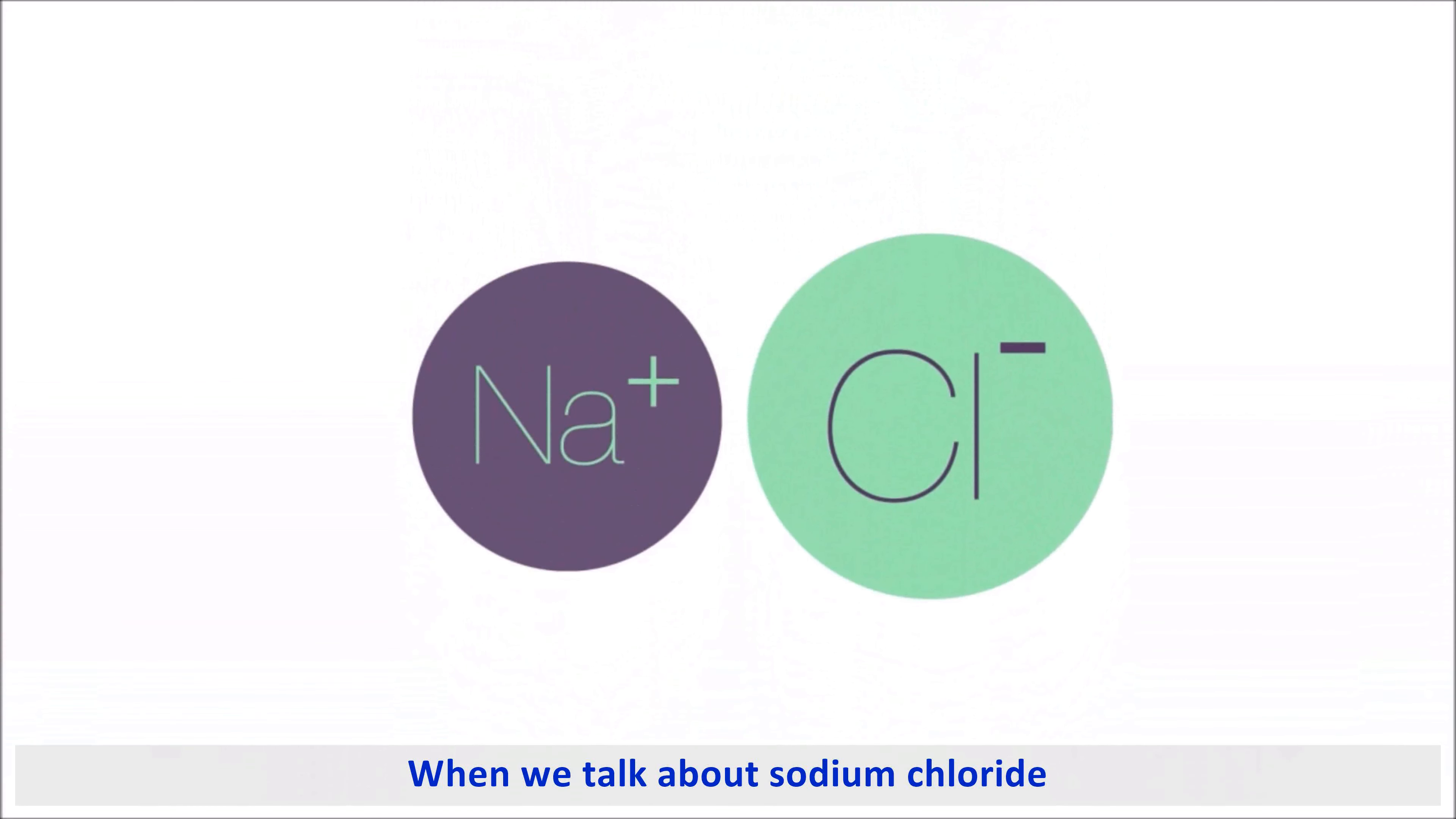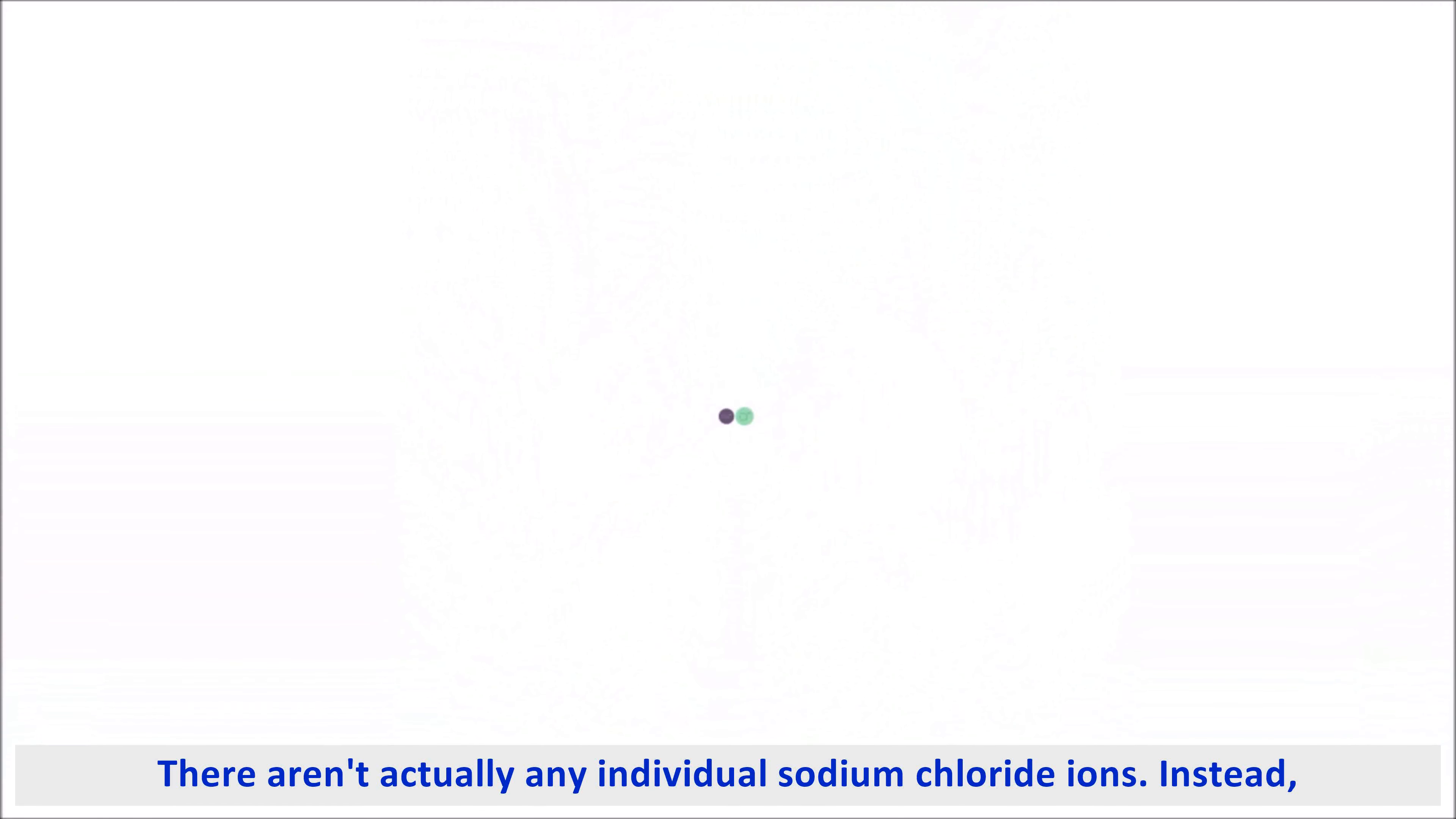When we talk about sodium chloride, there aren't actually any individual sodium chloride molecules. Instead, the sodium and chloride ions are arranged in a regular repeating 3D pattern known as a giant ionic lattice.